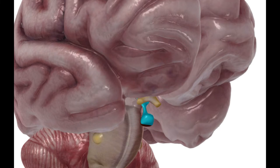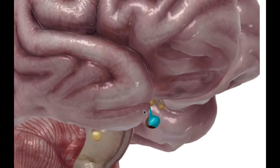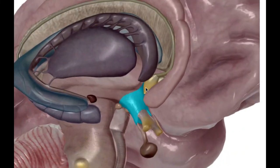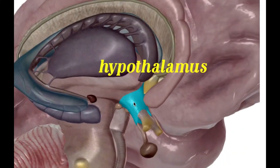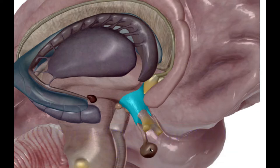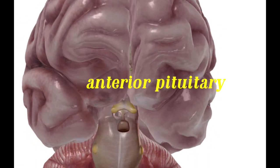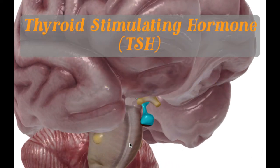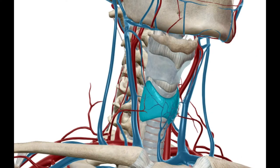The thyroid gland is the main mechanism the body uses to create homeostasis through the metabolic system, but even before that we have the anterior pituitary, and before that the hypothalamus. The hypothalamus releases thyroid releasing hormone (TRH), which travels down to the anterior pituitary and initiates the release of thyroid stimulating hormone (TSH). TSH then travels to the thyroid.